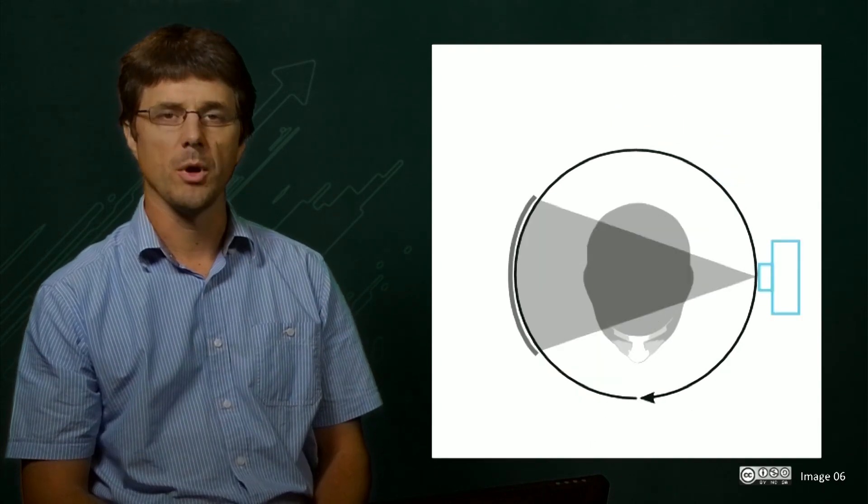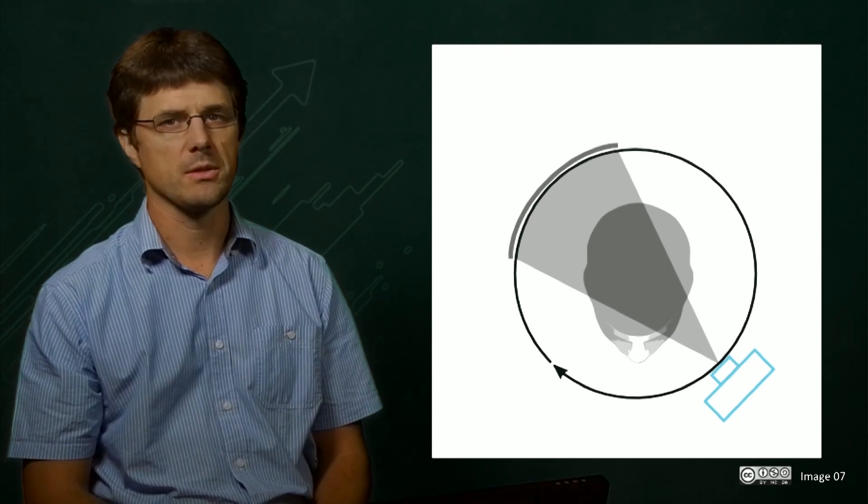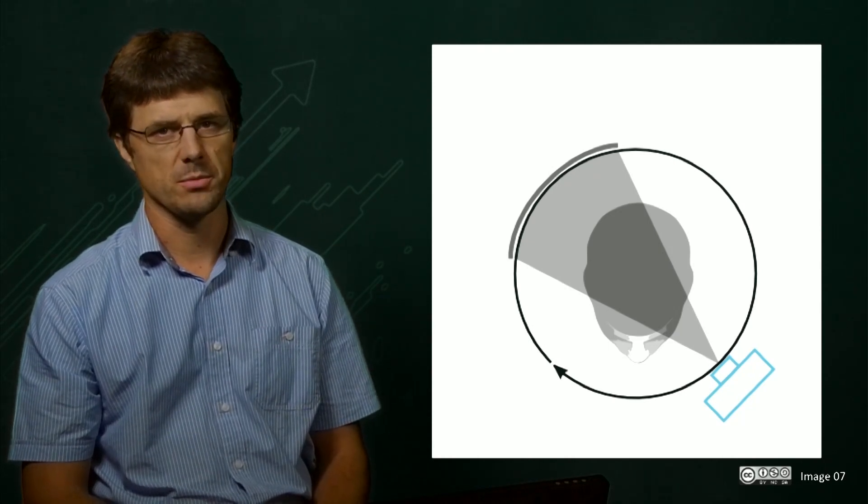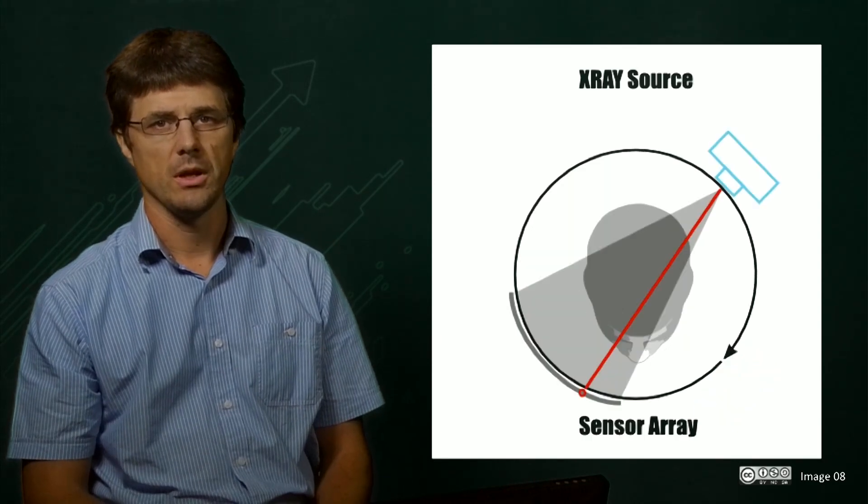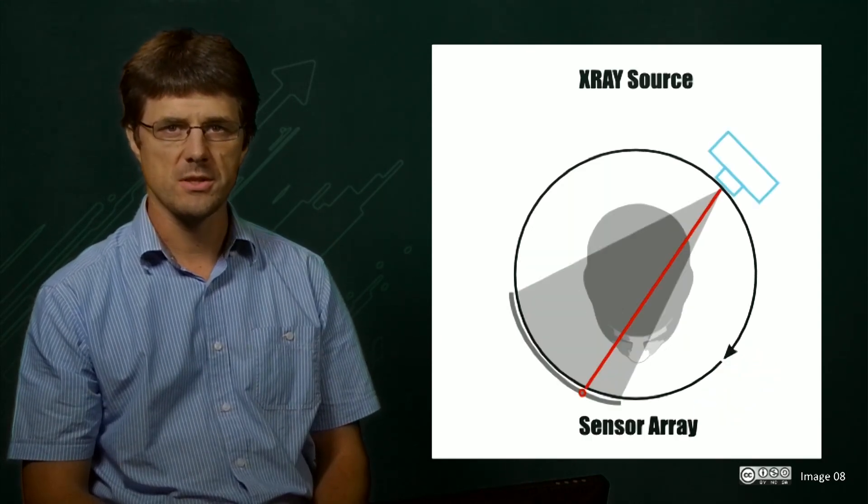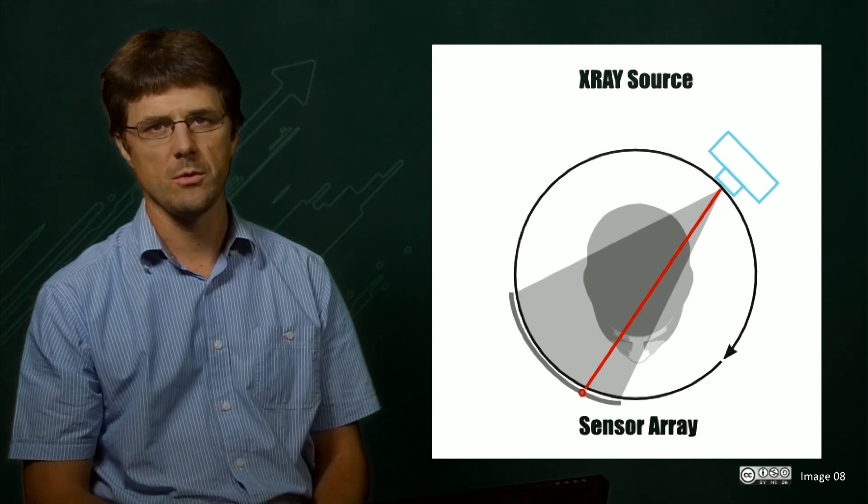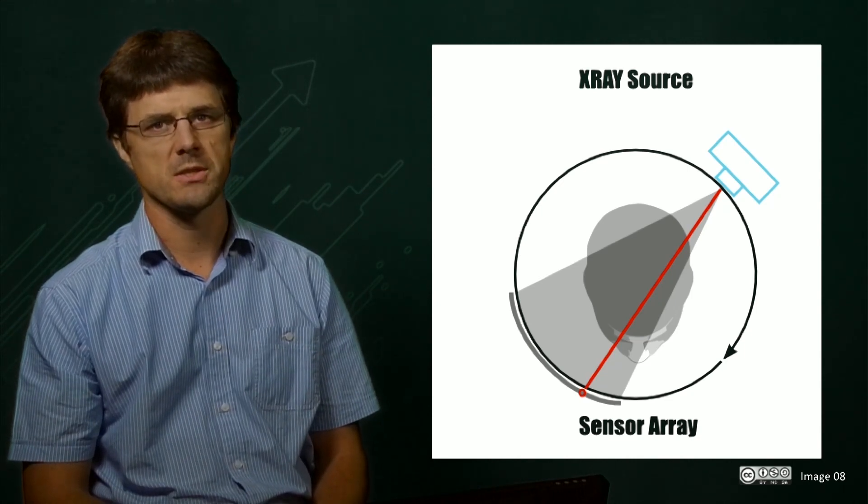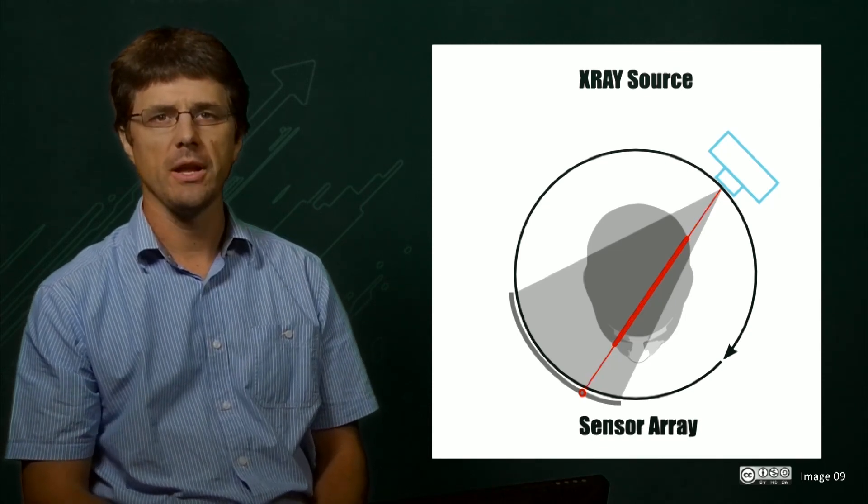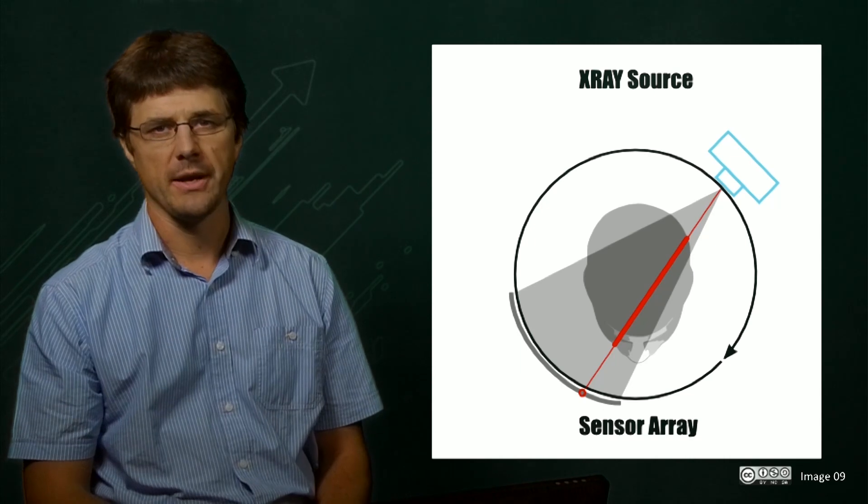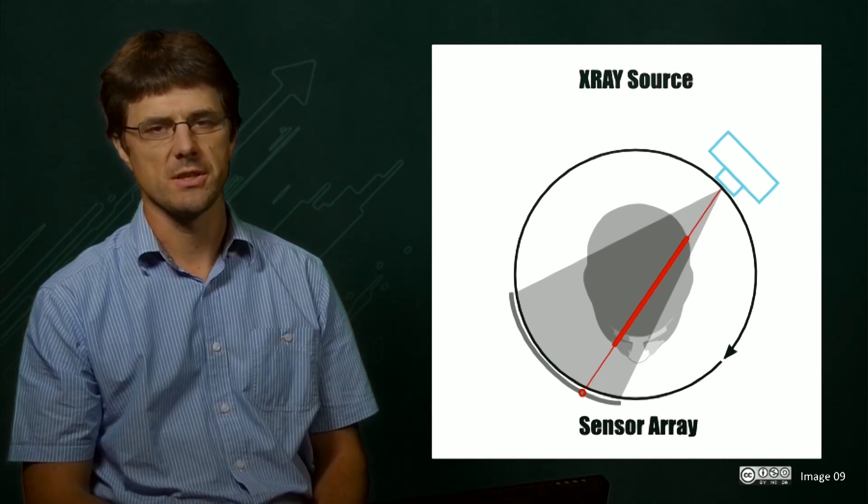As the gantry rotates, multiple projections are then taken. In our case, we will base our examples on four projections for simplicity, even though this number is very low. It is important to remember that the value the sensor will see at the red circled point is the sum of the attenuation that beam will experience as it passes through tissue. This single number is the only output data recorded, and as such, each projection will be a linear series of numbers across the sensor array.